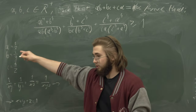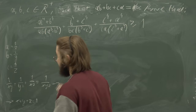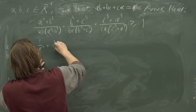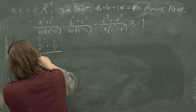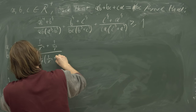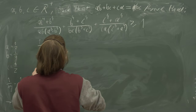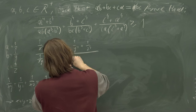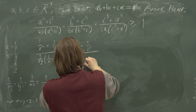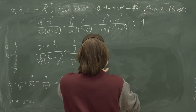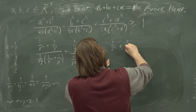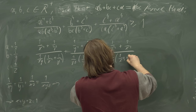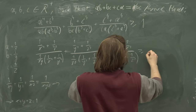Let's rewrite the entire expression in terms of this substitution. It's going to be painful, but here we go. a⁴ becomes 1/x⁴, b⁴ becomes 1/y⁴, divided by (1/(xy)) · (1/x³ + 1/y³), plus 1/y⁴ + 1/z⁴ divided by (1/(yz)) · (1/y³ + 1/z³), plus 1/z⁴ + 1/x⁴ divided by (1/(zx)) · (1/z³ + 1/x³), all supposed to be greater than or equal to 1.